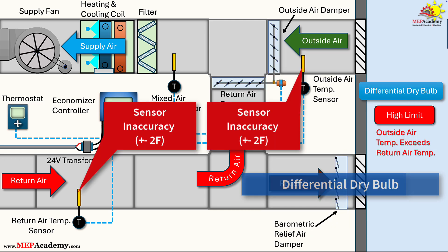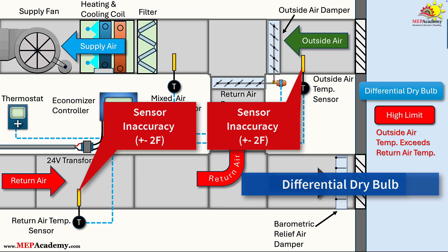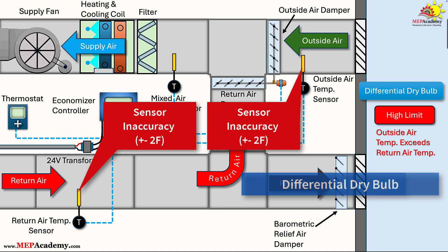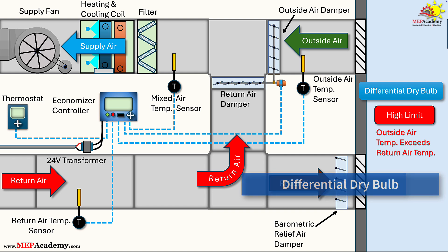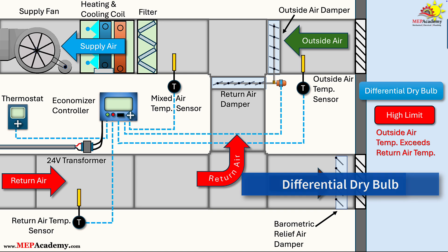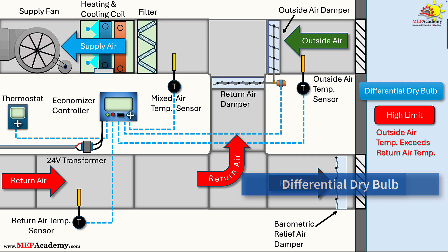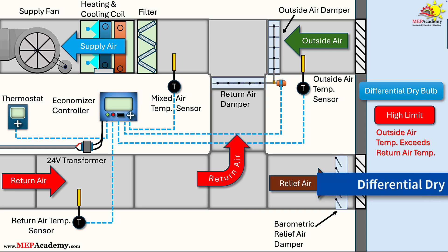Sensor error is higher, ±4°F, due to the dual sensors, amplifying inaccuracies. Standards prohibit this strategy in moist, warm climates such as Zones 1A to 6A, because it can lead to excessive hours of operation with damp air, boosting mechanical cooling needs and risking mold growth. It's better suited for drier climates like Zones 1B–8, where humidity is less of a concern.